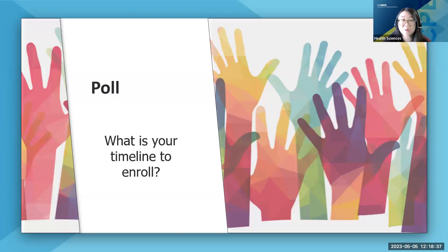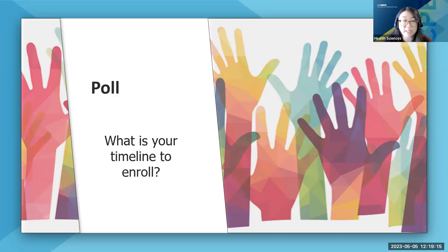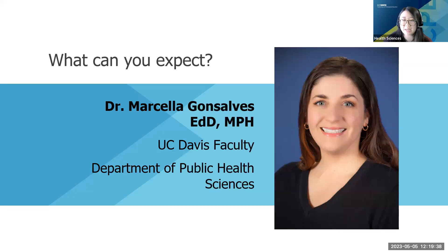Now that you've seen the schedule and program structure, do you have a sense of your timeline to enroll? Are you hoping to enroll immediately in the summer quarter, maybe in the fall quarter, within the next year, or more long term? Our poll shows the majority are planning for the fall quarter — it's always handy to plan ahead. Some are also joining in the summer quarter. Christy can always help you out with enrollment and answering any other questions.